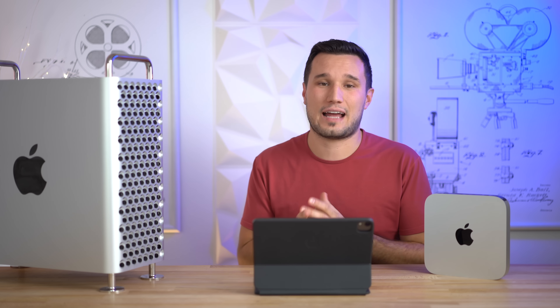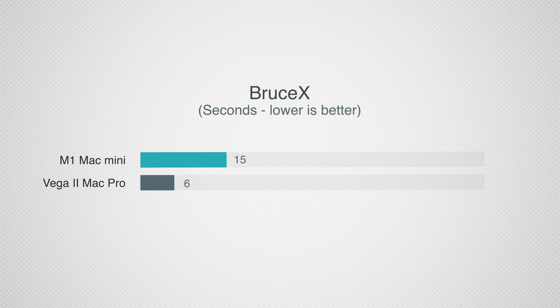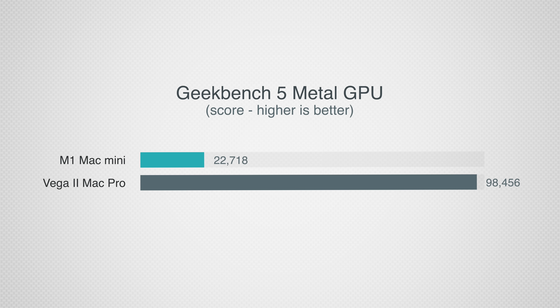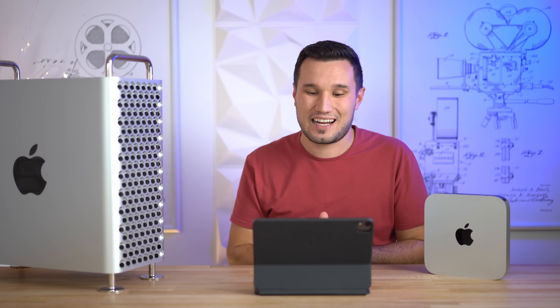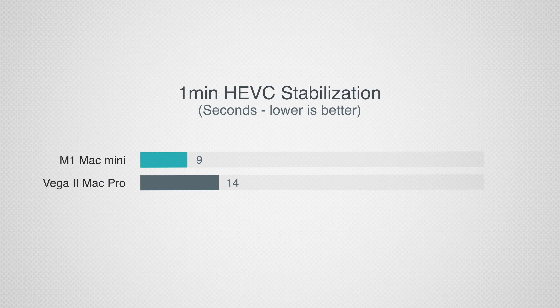Now let's get into video editing, which we do a ton of at Max Tech. I'm focusing on Final Cut Pro. In Bruce X, which tests graphics card performance, the Mac Pro is a little more than twice as powerful. That's interesting because the Metal performance in Geekbench was more than four times — so we're seeing some Final Cut optimization. For stabilizing a one-minute 4K H.265 file, the Mac Mini is actually almost twice as fast.